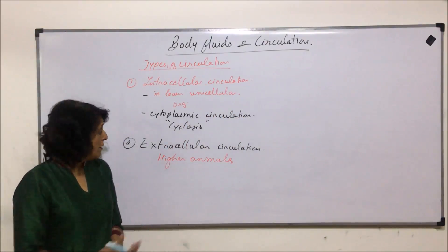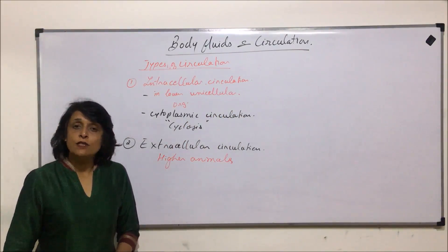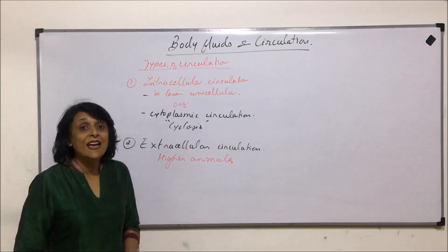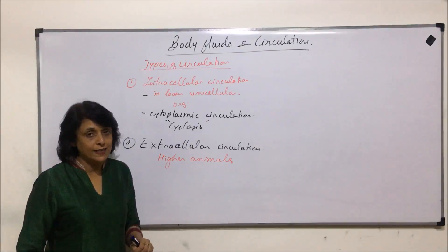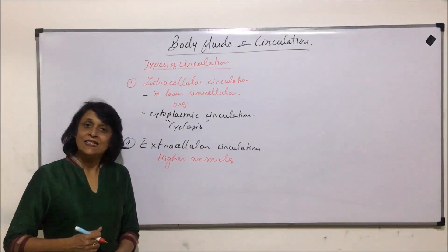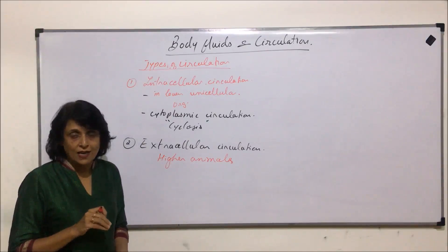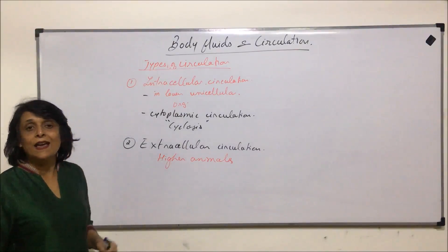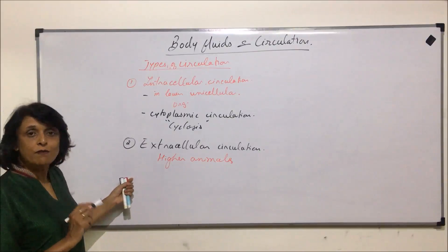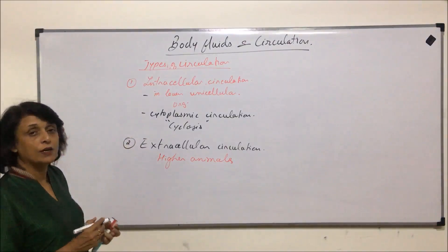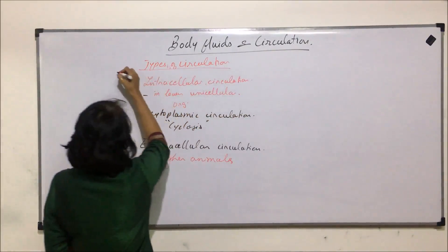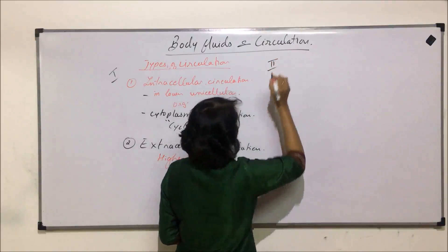In case of higher animals like human beings, it is the blood which is circulating and it is moving between the tissues with the help of the capillaries. The blood doesn't come out, but the movement is such that exchange can take place — not into the cell but outside the cell. So this is called extracellular circulation, seen in higher animals.